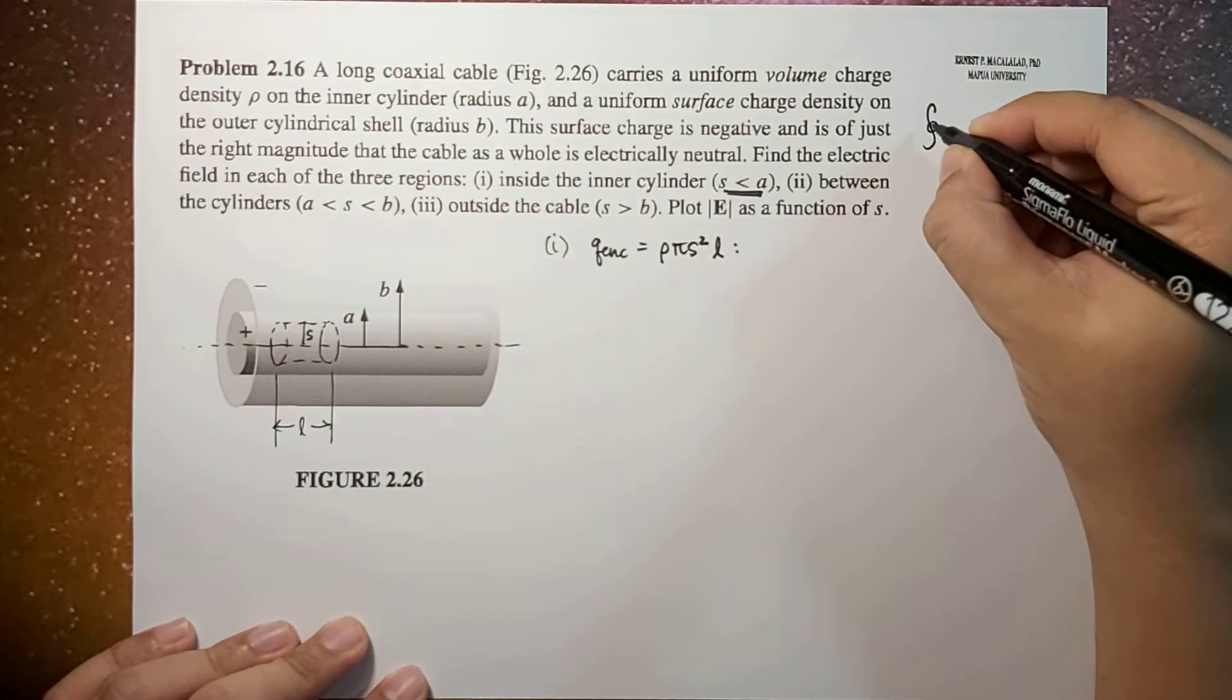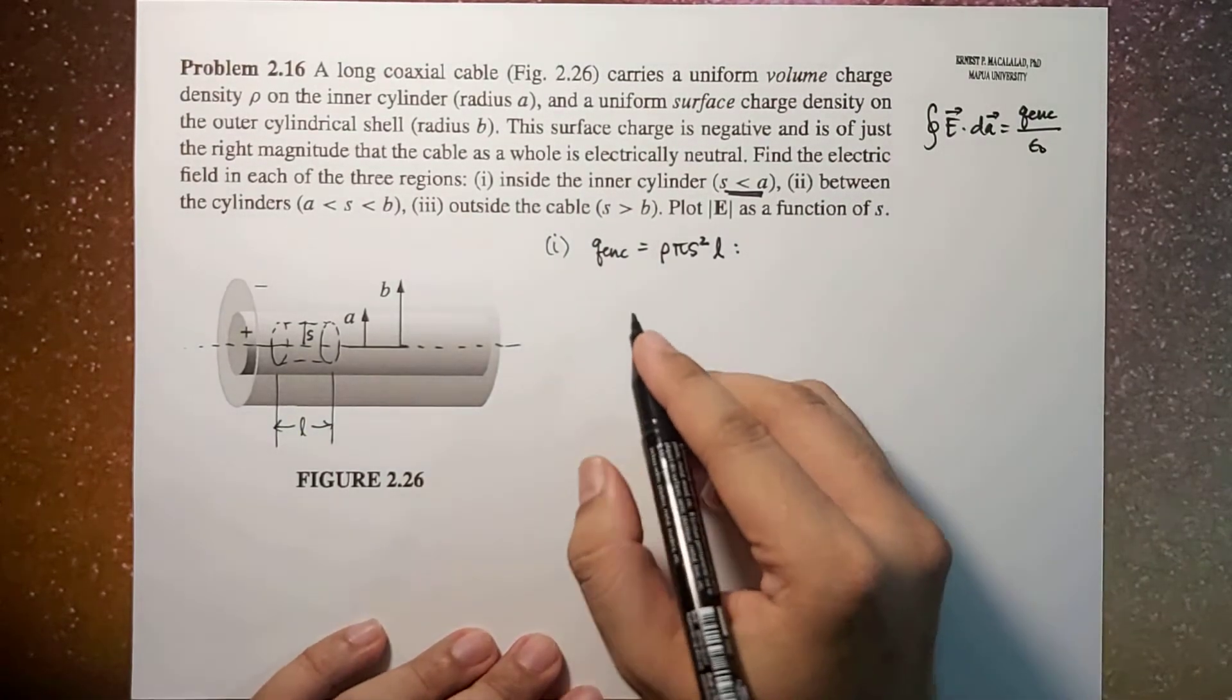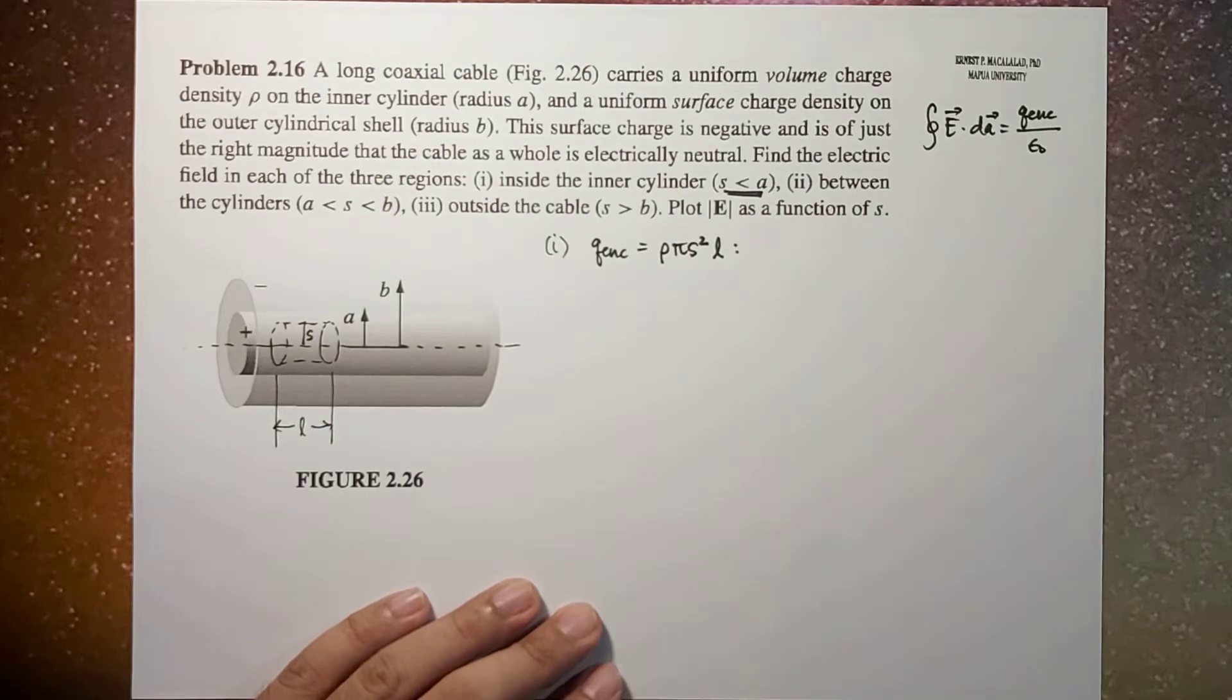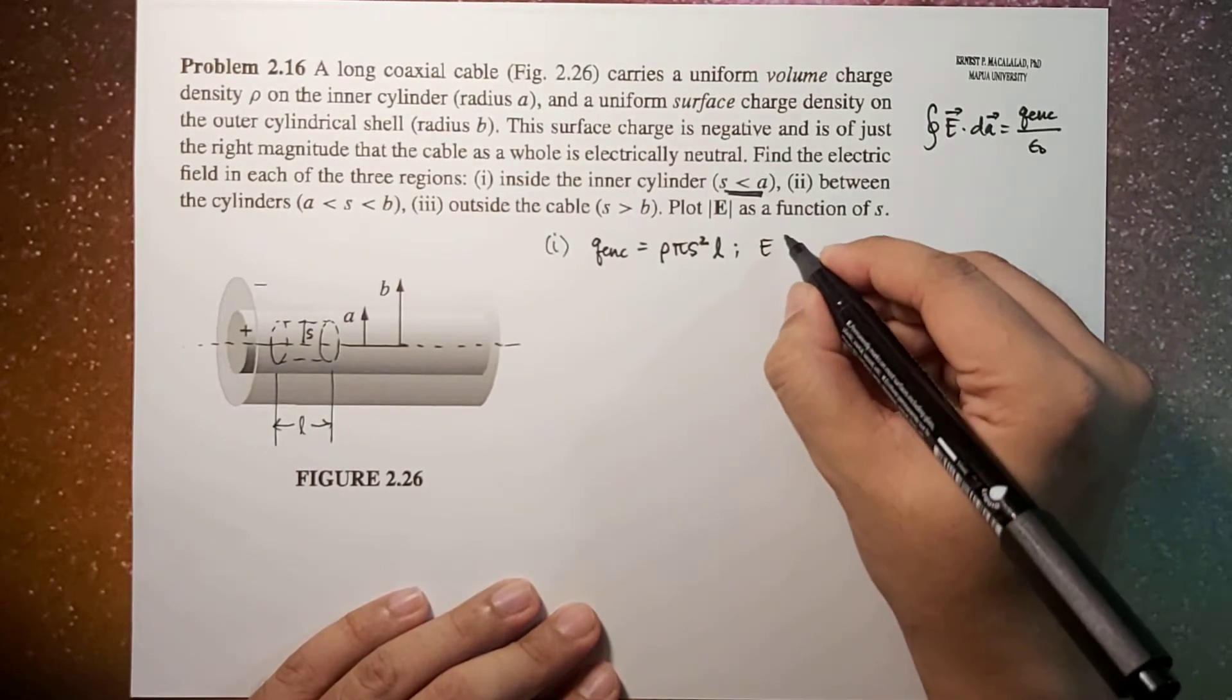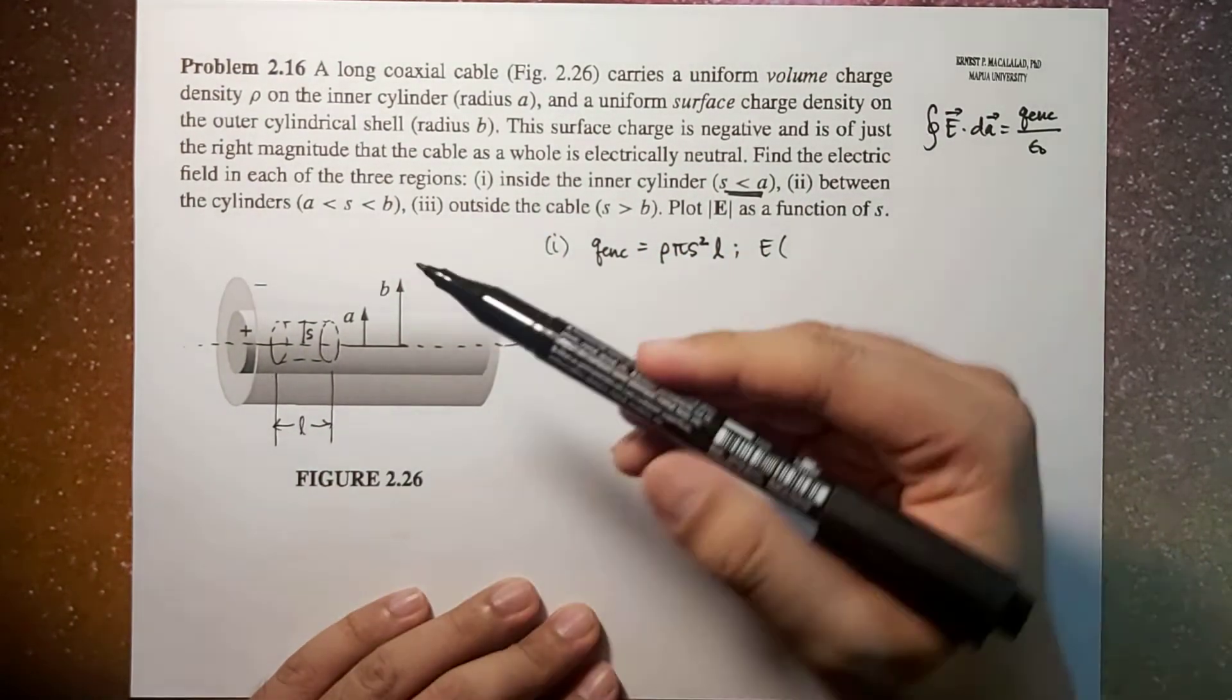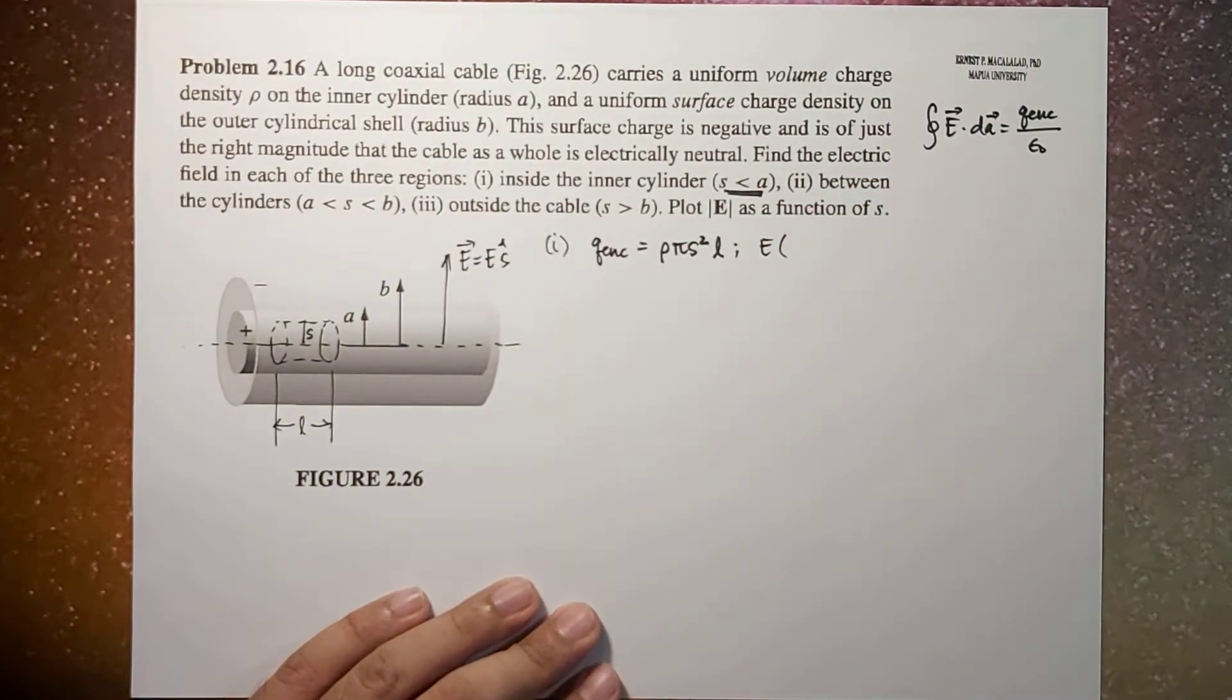So therefore, Gauss' law—remember Gauss' law is the closed integral of E dot dA—this is equal to Q enclosed over ε₀. The first thing we calculated is the Q enclosed, and then we apply this. Now, because we are using a cylindrical Gaussian surface, this integral will now be reduced to simple multiplication of the electric field times the area of your Gaussian surface area. But we're going to look at the lateral area, not the end area, because the electric field will be along the S hat direction.